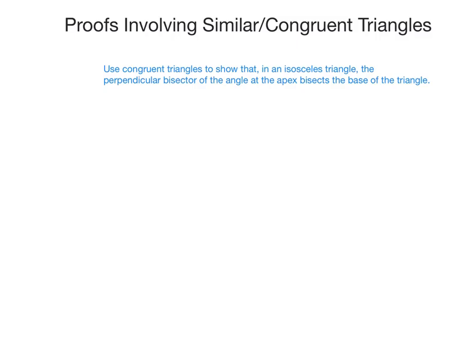I'm going to use congruent triangles to show that if I have an isosceles triangle, then the line that bisects the angle at the top of the triangle — the apex — bisects the base of that triangle.